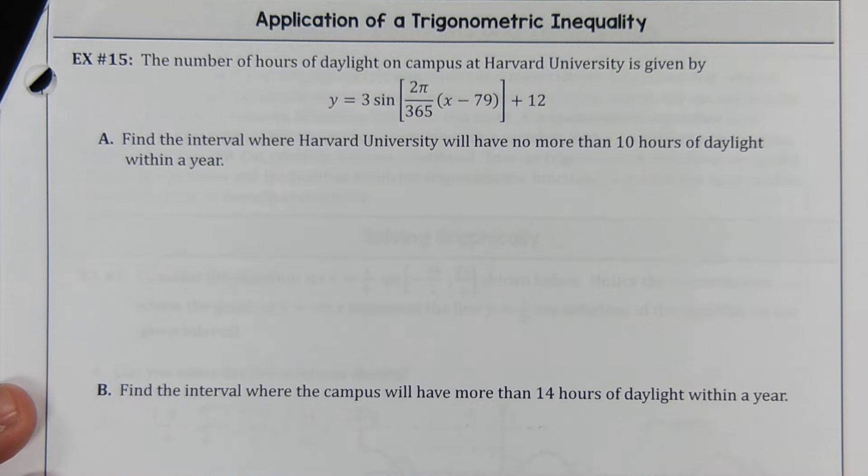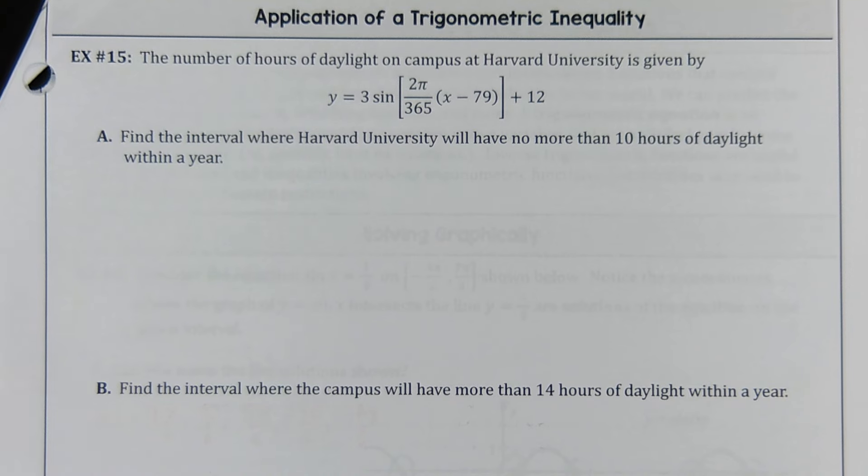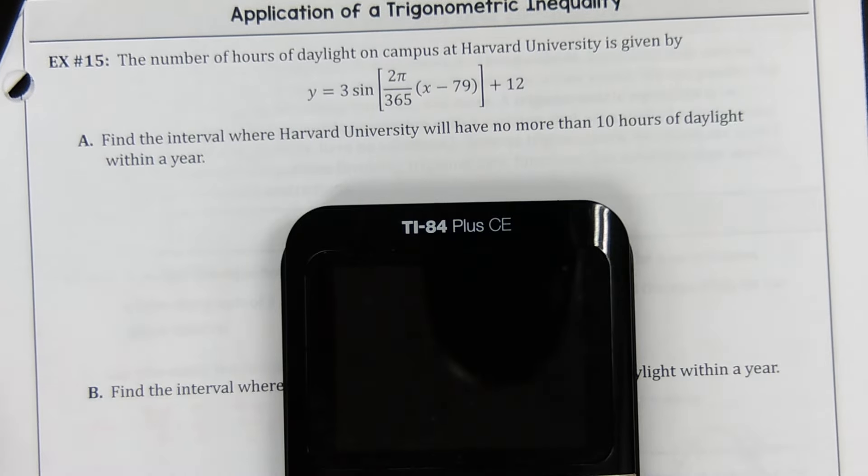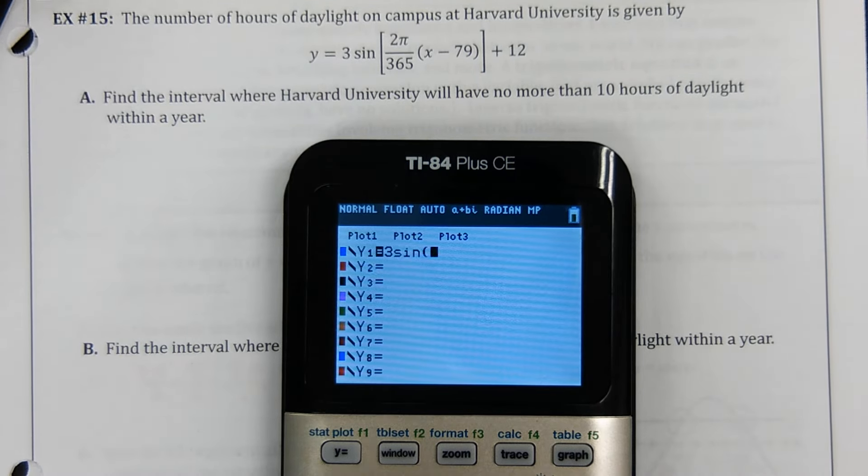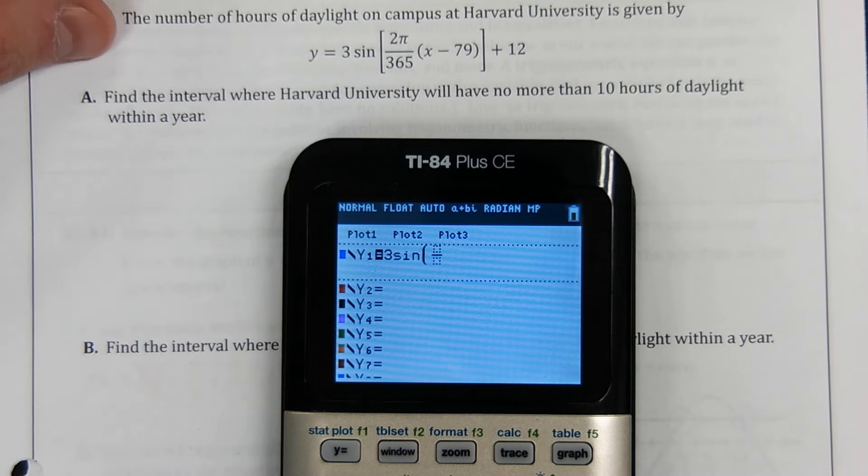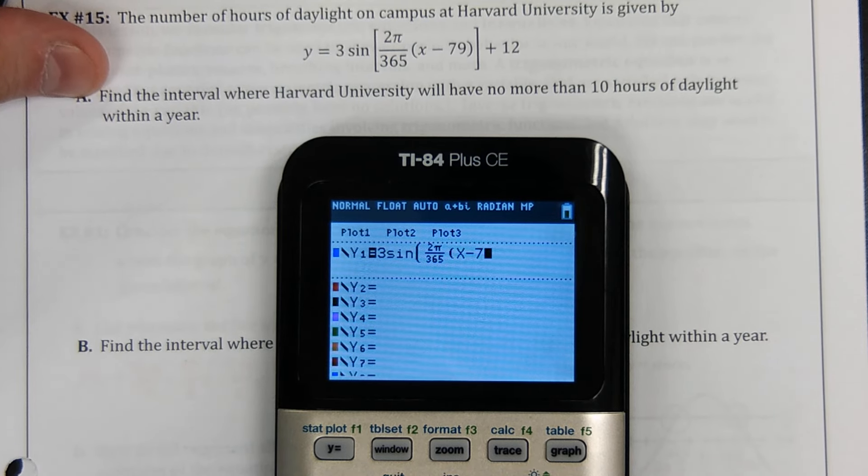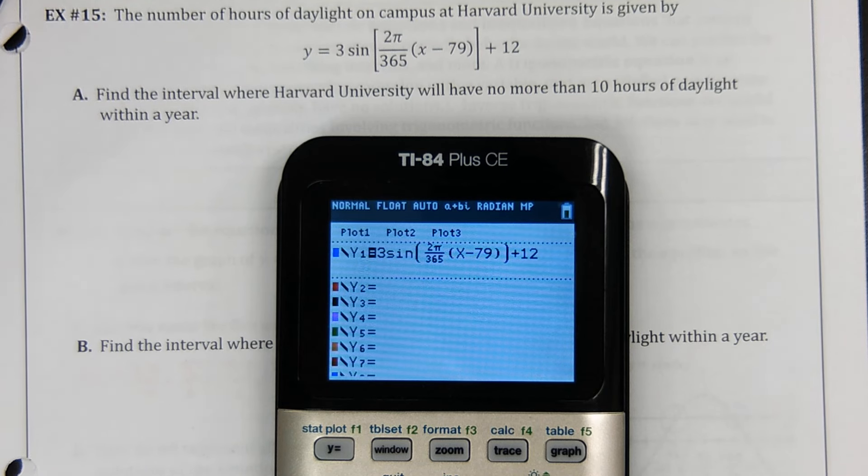So we will solve for X values, and then I'll just go ahead and tell you what day of the year they are. Yeah, see, you'd have to know how many days are in each month and things like that. He says that's easy. This guy. The number of hours of daylight on campus at Harvard University is given by this equation. It is a positive sine wave that has a phase shift and a vertical shift. It says find the interval where Harvard University will have no more than 10 hours of daylight within a year. So this is the number of hours of daylight in a year, and that's why we've got this 365 here. So let's go to Y equals and let's type this in. 3 sine. I'll do alpha Y equals stack fraction. We have X minus 79 and plus 12. There.